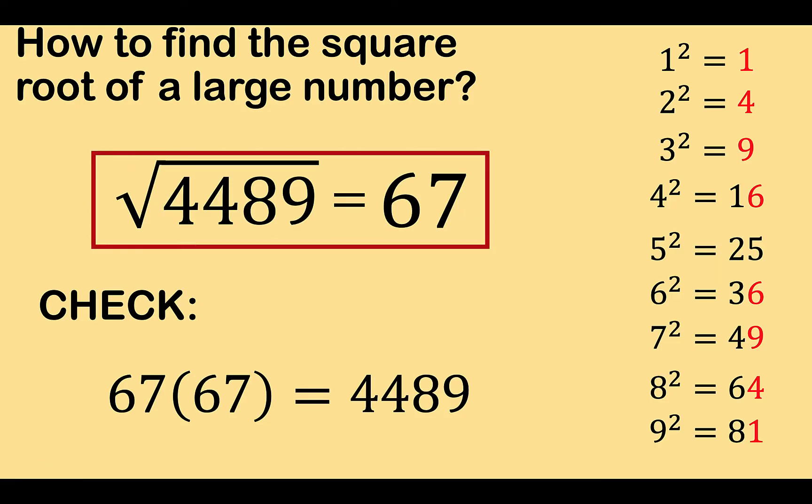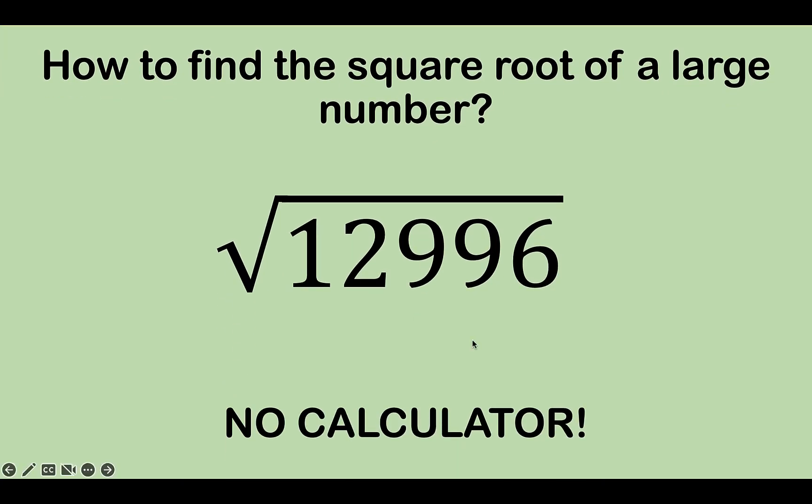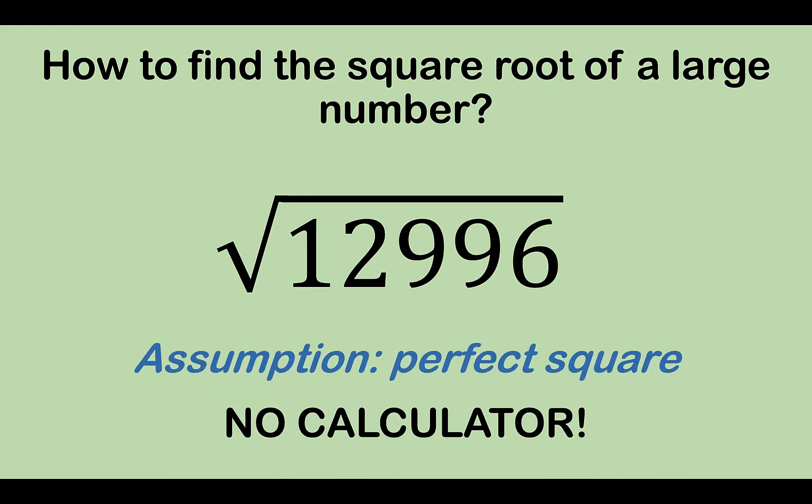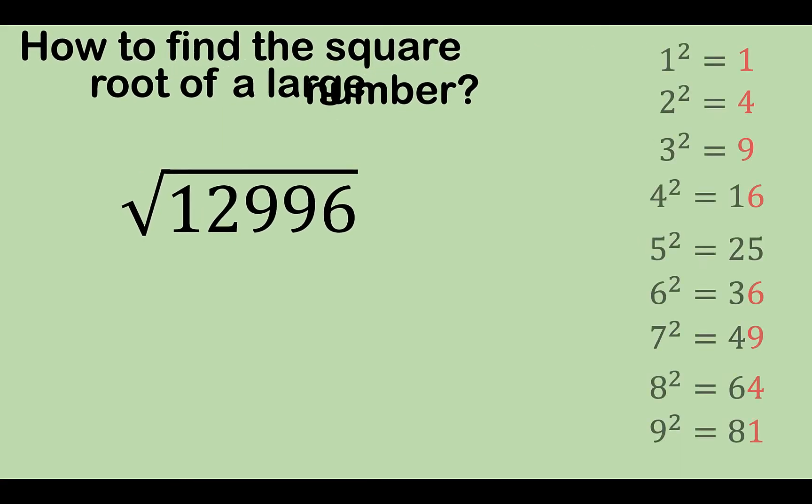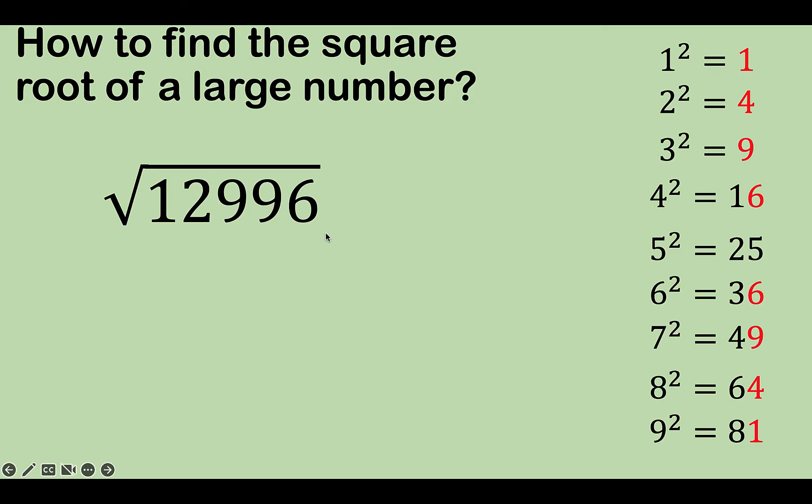Let's have another example of this. Let's say you are asked to find the square root of 12,996 without using a calculator. Again, our assumption here is we know that this number is a perfect square. Otherwise, we are going to use a different method. So let's recall again our table of squares. Then from the decimal point, find the first two digits, 96. This ends with 6. So we are going to choose 4 and 6. So we now have these two choices.